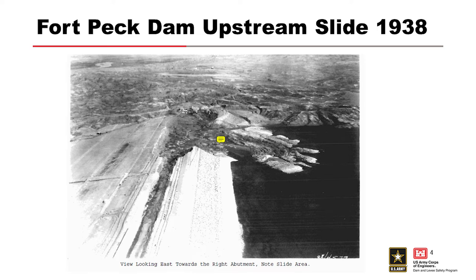You can get a sense of the deformation. There were some draglines that were dislocated to about where that yellow comment marker is — quite a bit of deformation — and you can also get a sense of the directionality of the slide. This is the right abutment, and the slope instability kind of tends to pivot around that right abutment into the reservoir.